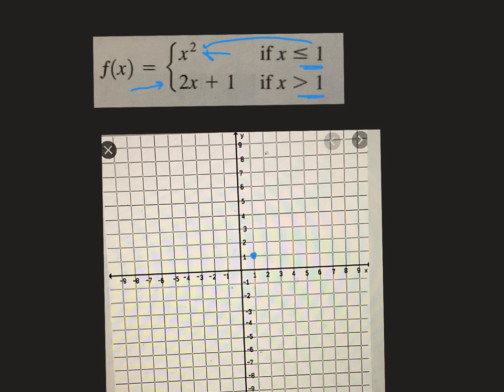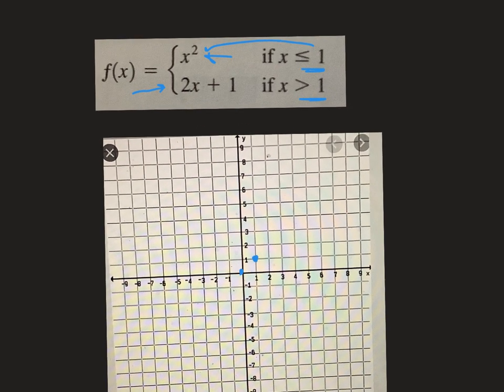And because it says less than 1, plug in something less than 1. I plug in 0, 0² is 0. Plug in -1, -1² is also positive 1. So what's happening is I'm getting my parabola. -2² is 4. Okay, so I'm going to get this much of a parabola. It's going to look like this. It's going to keep on going. That's the piece of the parabola that's less than 1.